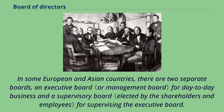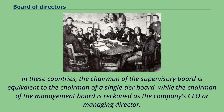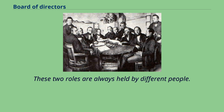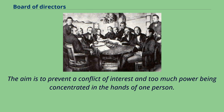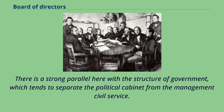In some European and Asian countries, there are two separate boards: an executive board for day-to-day business and a supervisory board for supervising the executive board. In these countries, the chairman of the supervisory board is equivalent to the chairman of a single-tier board, while the chairman of the management board is reckoned as the company's CEO or managing director. These two roles are always held by different people. This ensures a distinction between management by the executive board and governance by the supervisory board and allows for clear lines of authority. The aim is to prevent a conflict of interest and too much power being concentrated in the hands of one person.